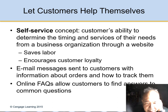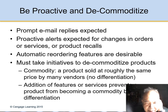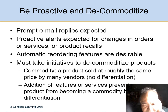Letting customers help themselves through self-service must be very intuitive — like reading a book where you know the chapters, the customer doesn't have to call up your company all the time. Being proactive means prompt email replies are expected and automatic ordering features are desirable. To avoid becoming a commodity — a product sold at roughly the same price by many vendors — you must take initiative to differentiate the product and add features.